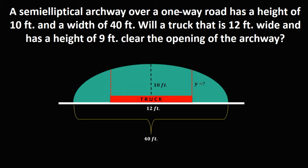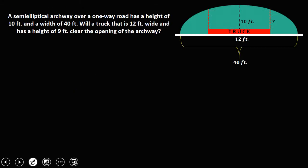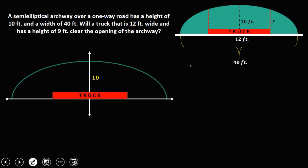So we need to compute the height of this area for us to know if this 9 feet high truck can pass this archway. But first, place this one in a Cartesian plane, the X and Y. So again, the height is 10 feet and this is the 12 feet truck. Then we need to compute this area for us to know if this 9 feet high truck can pass the archway.